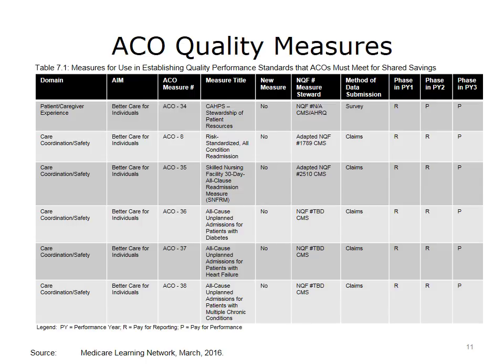Outcomes measures, on the other hand, look at how the patient fared. For example, an outcome measure might assess whether a patient's blood sugar level was under good control during the measurement period. Outcomes measures require more clinical data and are difficult to produce without a labor-intensive chart review unless data is being captured in an EHR. Currently, CMS is working to increase its use of outcomes measures. Private payers who operate ACO models may not use the same set of measures required for the CMS models, but generally they maintain quality measures that work in conjunction with the attributed patient population and risk stratification factors to set pay-for-performance targets.